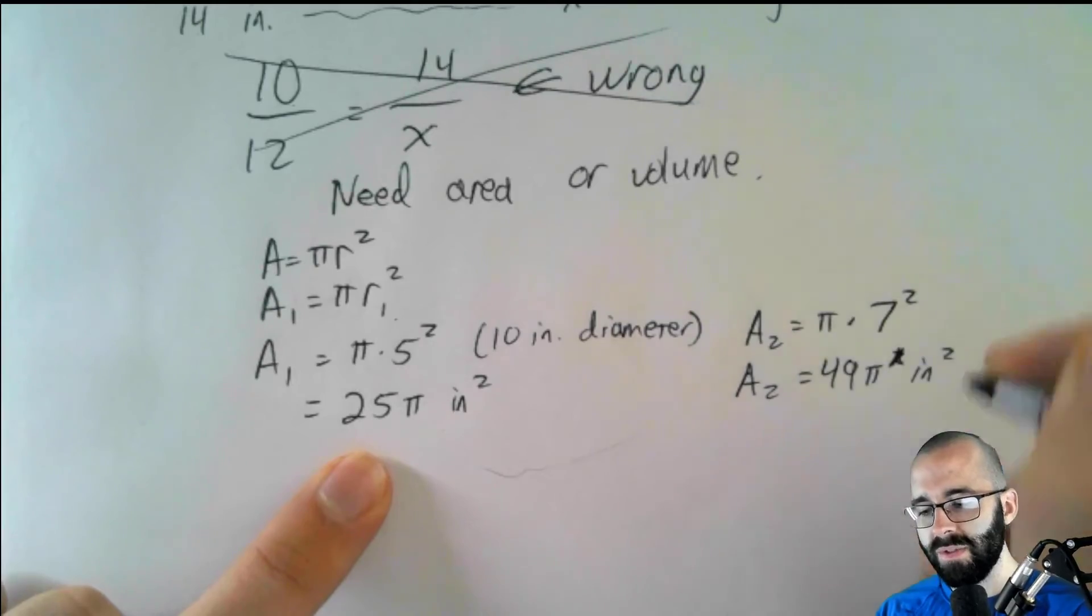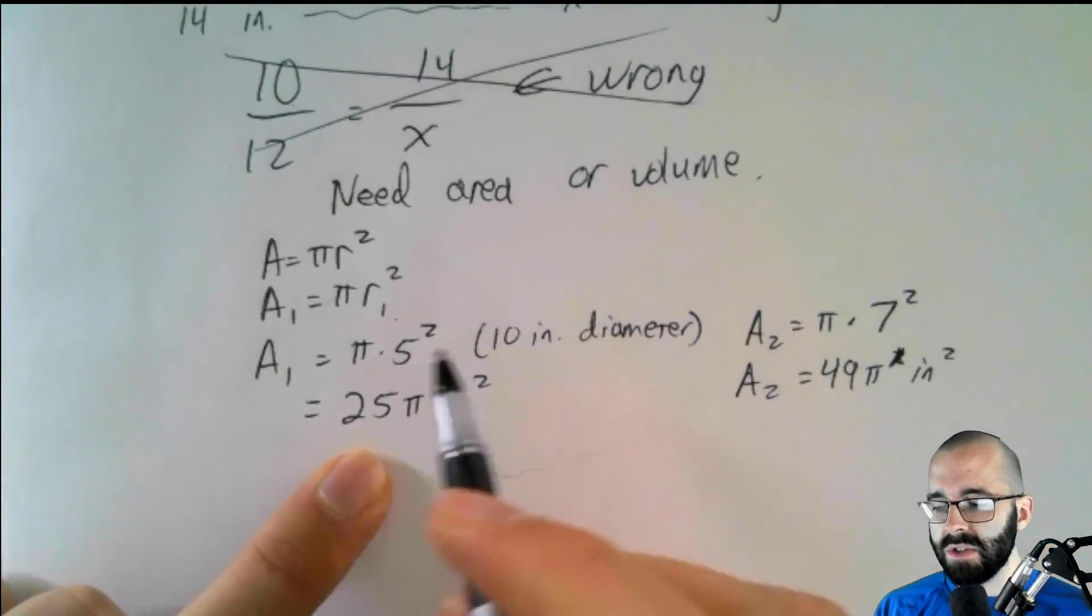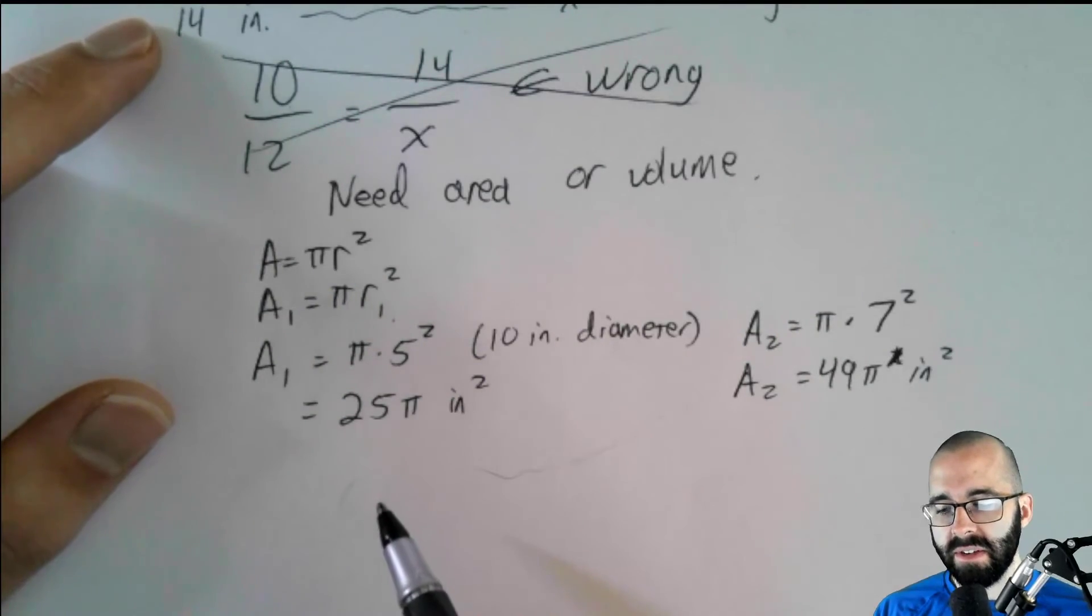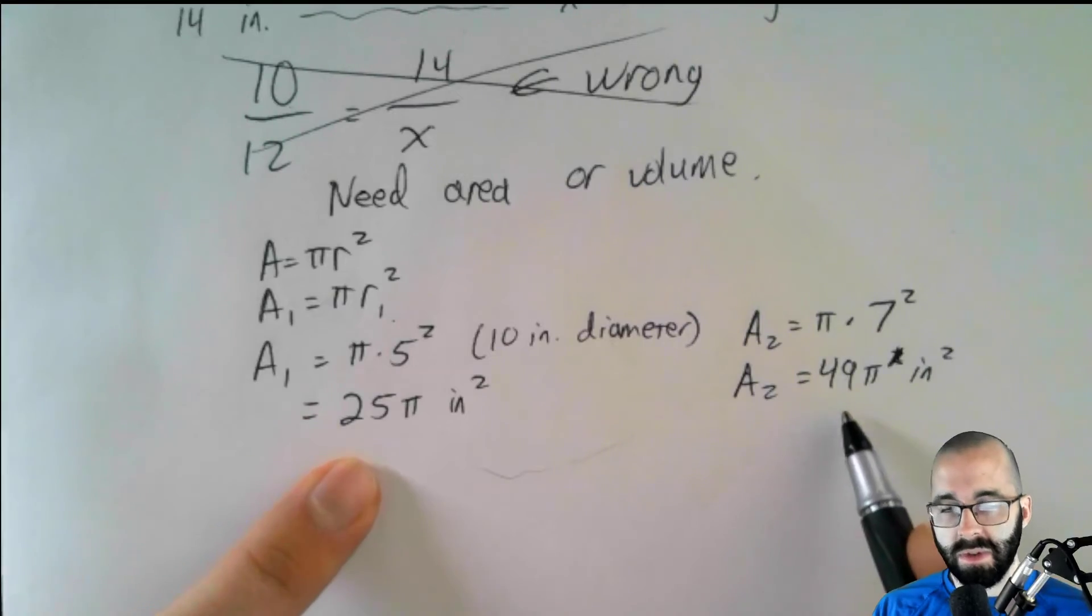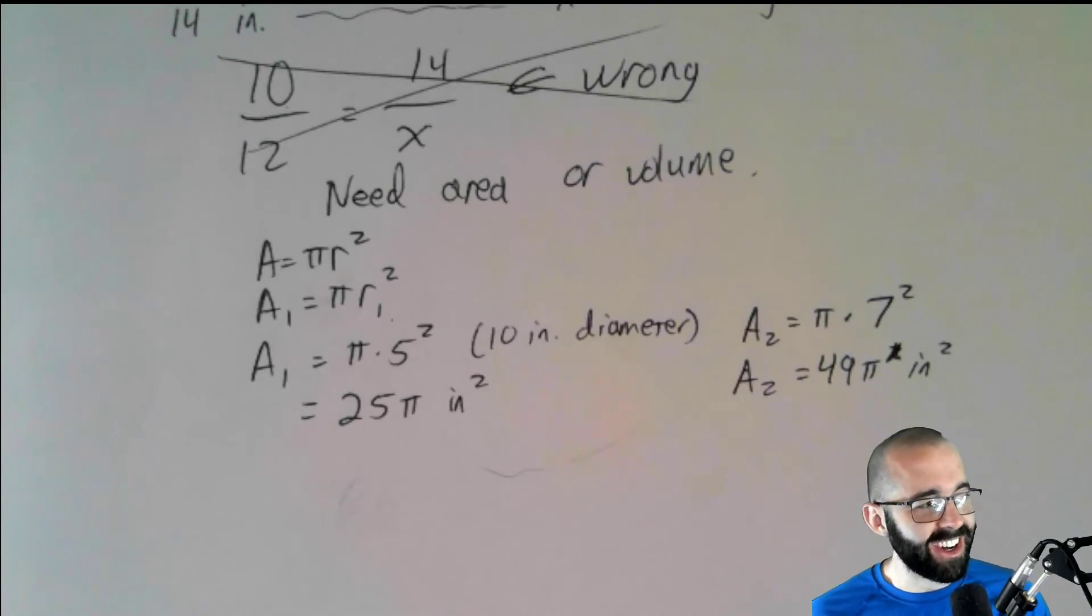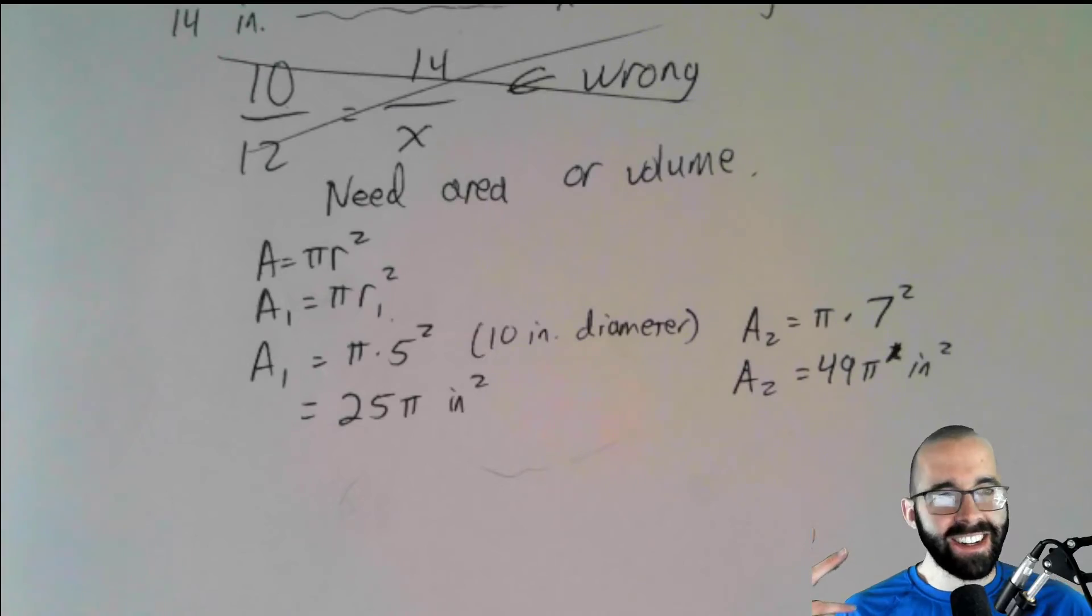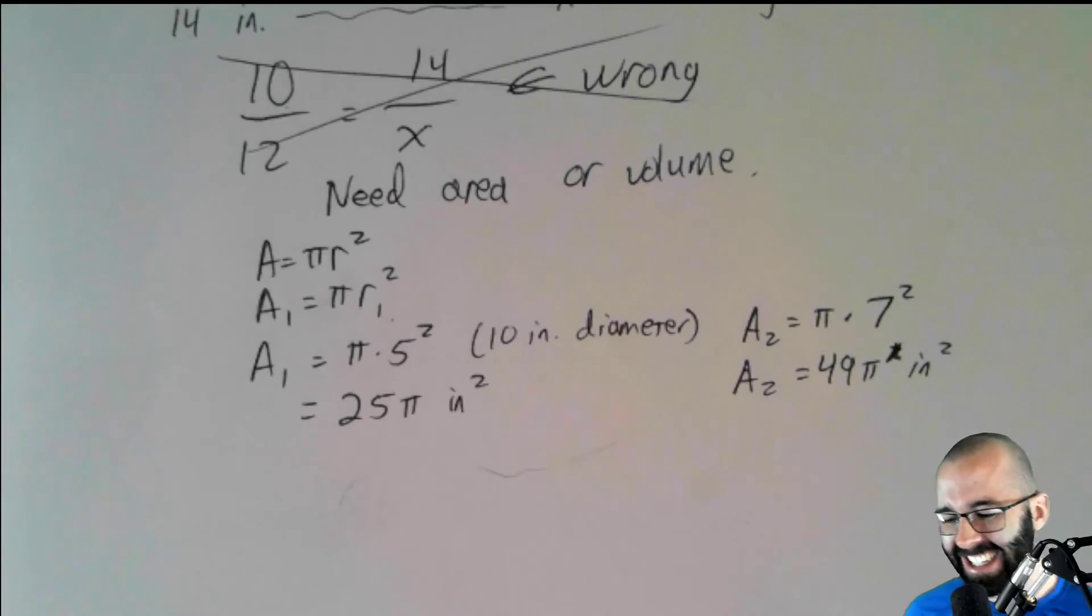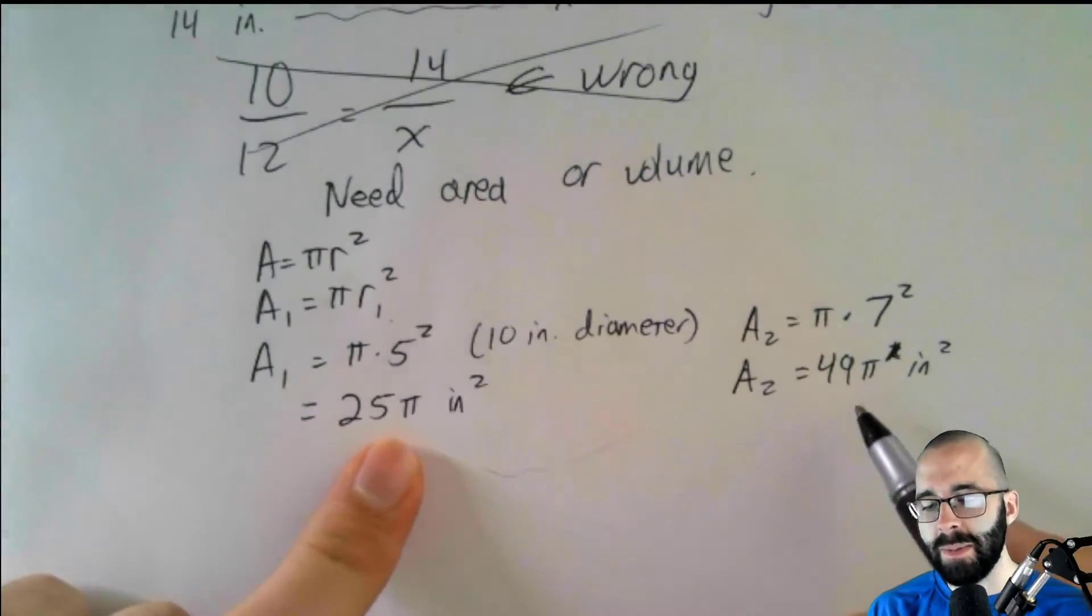Whoa! Alright. So even though we only increased the diameter by 40%, the area of the pizza doubled. As a side note, you can also use these calculations. You know, if you want to figure out, okay, what pizza do I buy to get the most pizza for the least amount of cost? I've done that too. And you can see how much pizza per dollar you're getting.